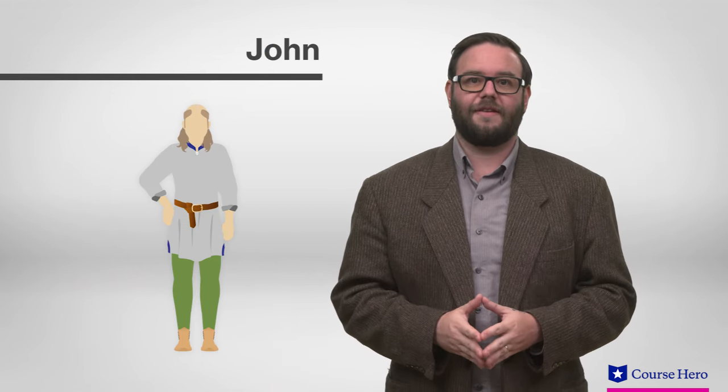The miller's tale proceeds. An old carpenter named John takes a student as a lodger. The student, Nicholas, is clever and charming. John's wife, Allison, is young and pretty.